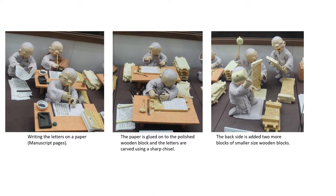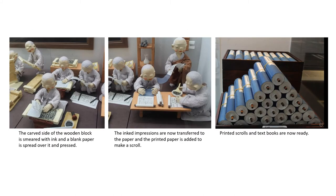The letters are then carved using a fine chisel and the entire block is carefully examined for any remaining mistakes. The engraved surface with manuscript letters is then smeared with ink, and blank paper is placed over it and pressed so that the ink is transferred to the paper.